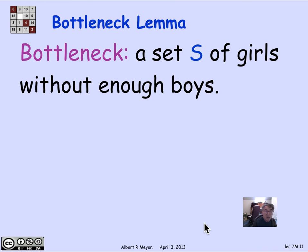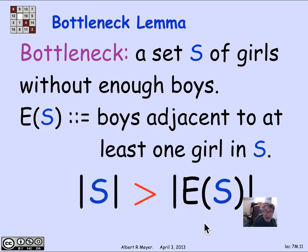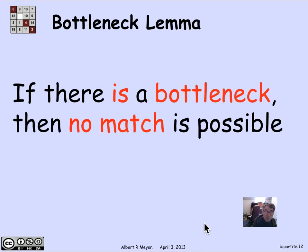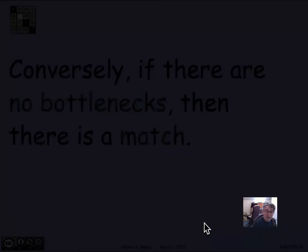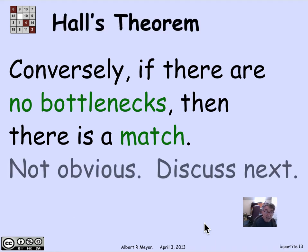The bottleneck lemma states that a bottleneck is a set S of girls without enough boys: if S is greater than E(S), that's called a bottleneck, and when there is one, no match is possible. This is a reason why a match might not exist. A rather deep theorem, known as Hall's theorem, states conversely that if there are no bottlenecks, then in fact a match does exist. This is not obvious, although there is an understandable proof of it, and that's what we're going to cover in the next segment.